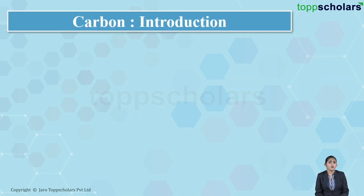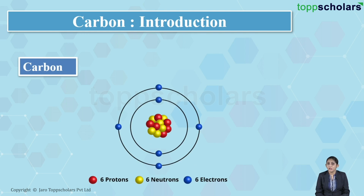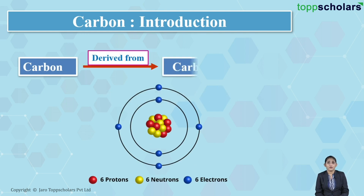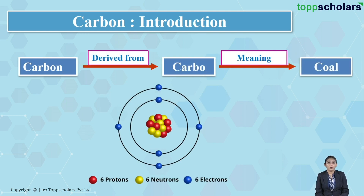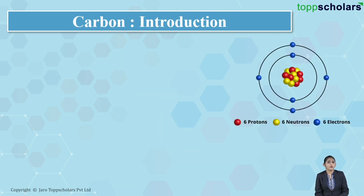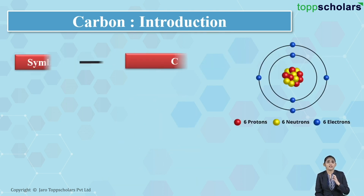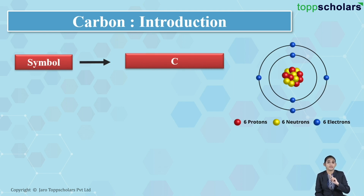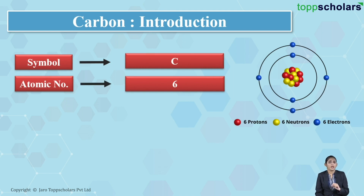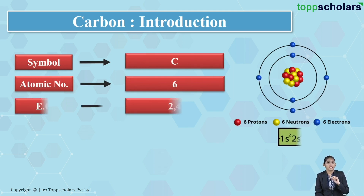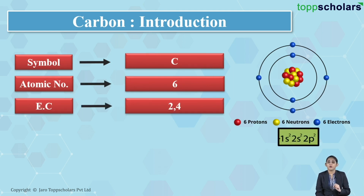If I talk about carbon, the word carbon is derived from 'carbo' which means coal. The symbol of carbon is capital C, and its atomic number is 6. So its electronic configuration becomes 2,4 — that is 1s2, 2s2, 2p2.